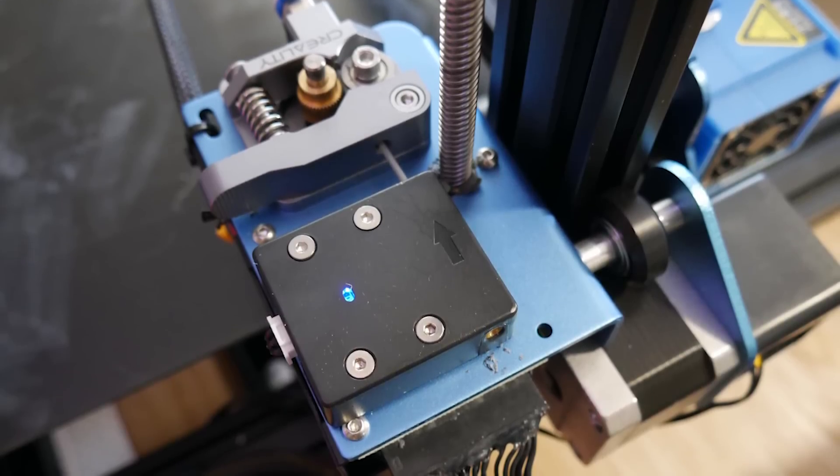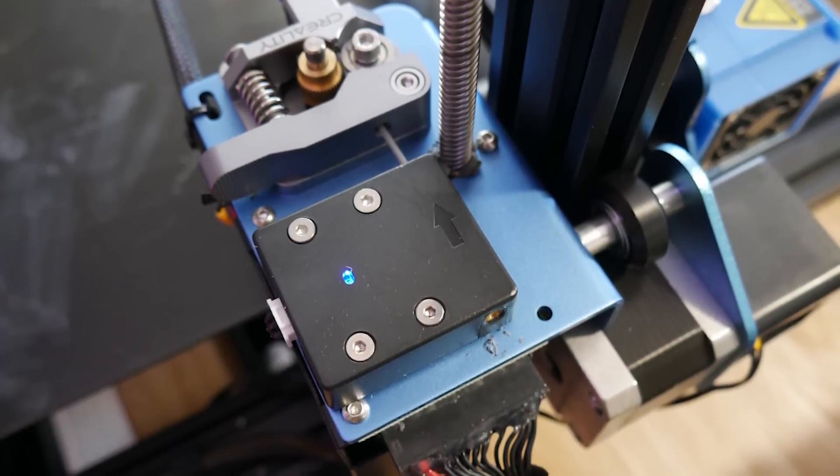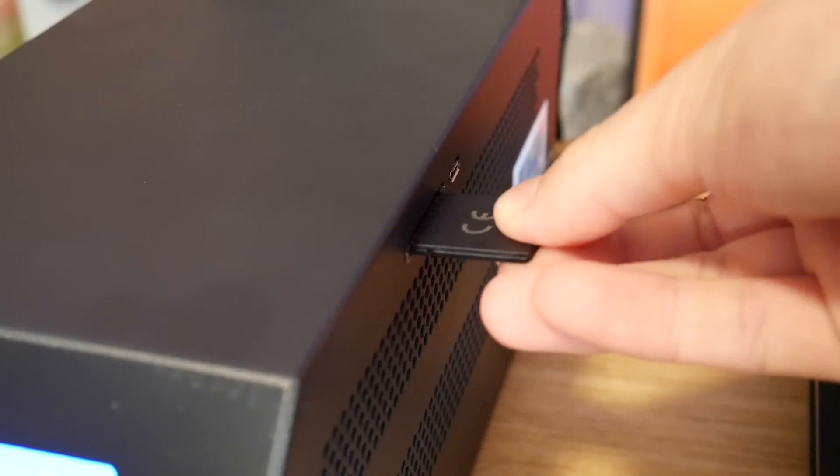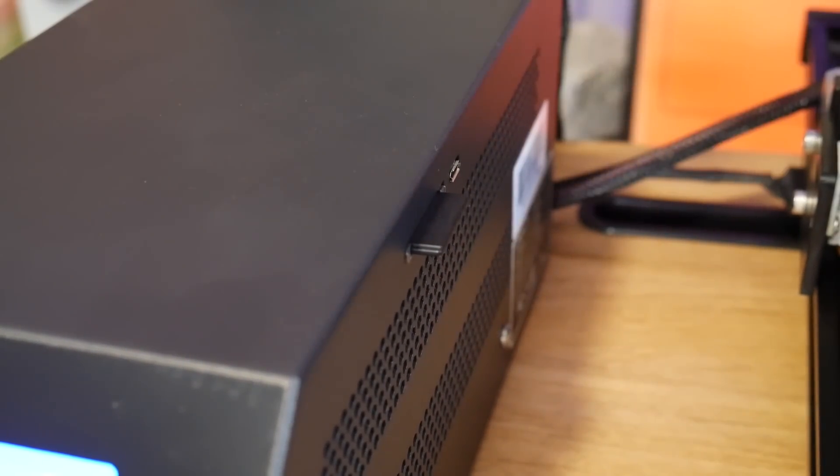Creature comforts beyond that include a filament outage sensor, power loss recovery, and a move to a full-size SD card which is much nicer to handle and much more durable than micro SD.